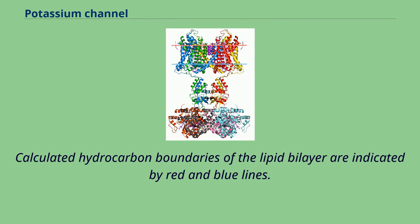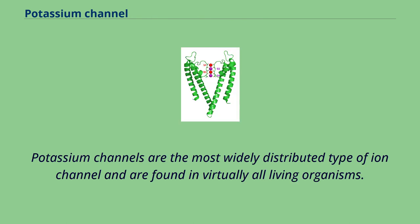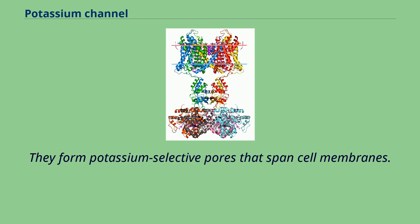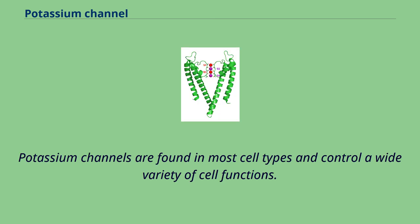Calculated hydrocarbon boundaries of the lipid bilayer are indicated by red and blue lines. Potassium channels are the most widely distributed type of ion channel and are found in virtually all living organisms. They form potassium-selective pores that span cell membranes and are found in most cell types, controlling a wide variety of cell functions.